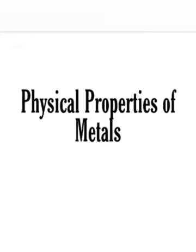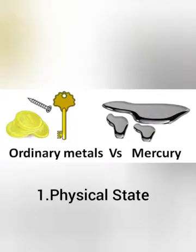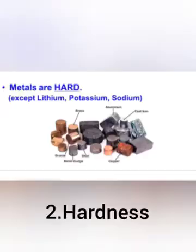First topic is physical state. Except mercury, all other metals are solid at room temperature. Mercury is the only metal which is in liquid form at room temperature. Other metals like iron, copper, and aluminium are solid at room temperature; they require very high temperature to become liquid.